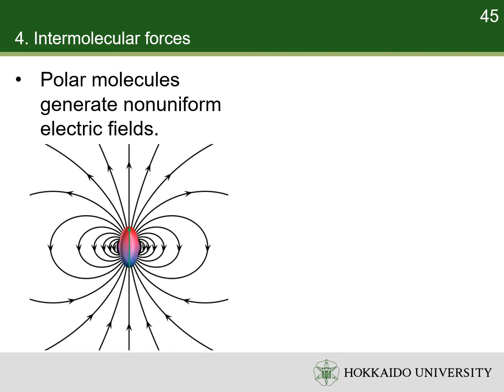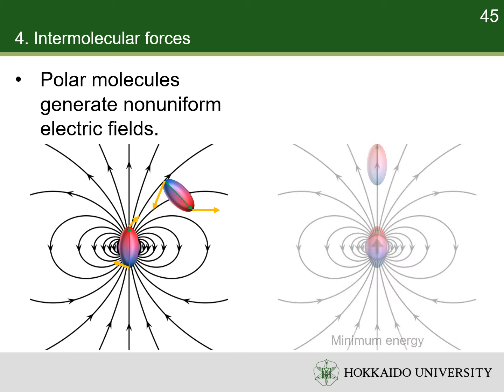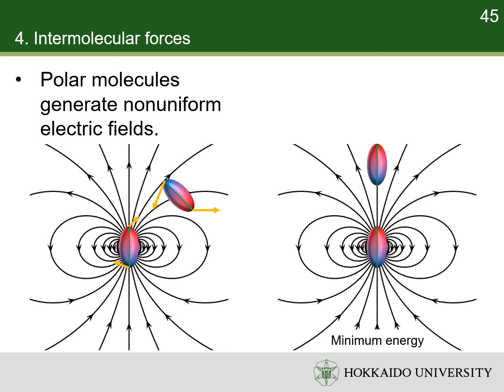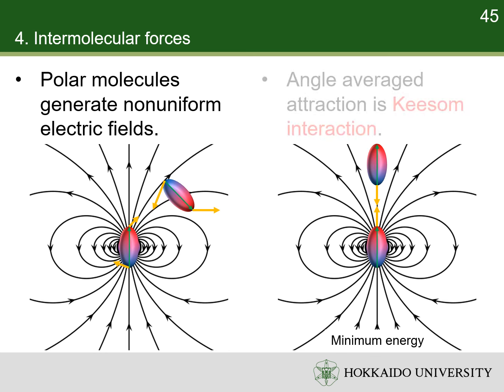A permanent electric dipole of a polar molecule also generates a non-uniform electric field, which interacts with another polar molecule. In each other's electric field, the dipoles are subject to torques and receive net forces. These forces tend to align the molecules to reduce potential energy. As a result, the positive end of a polar molecule will attract the negative end of the other polar molecule. With this alignment, they have a net attraction. The angle-averaged attraction is also called Keesom interaction.